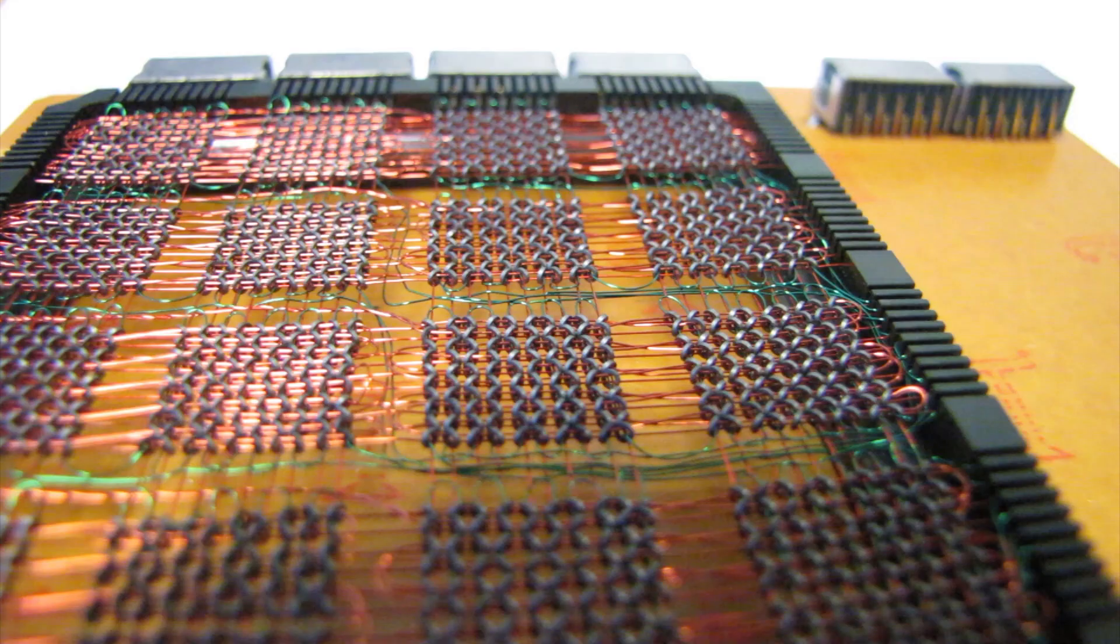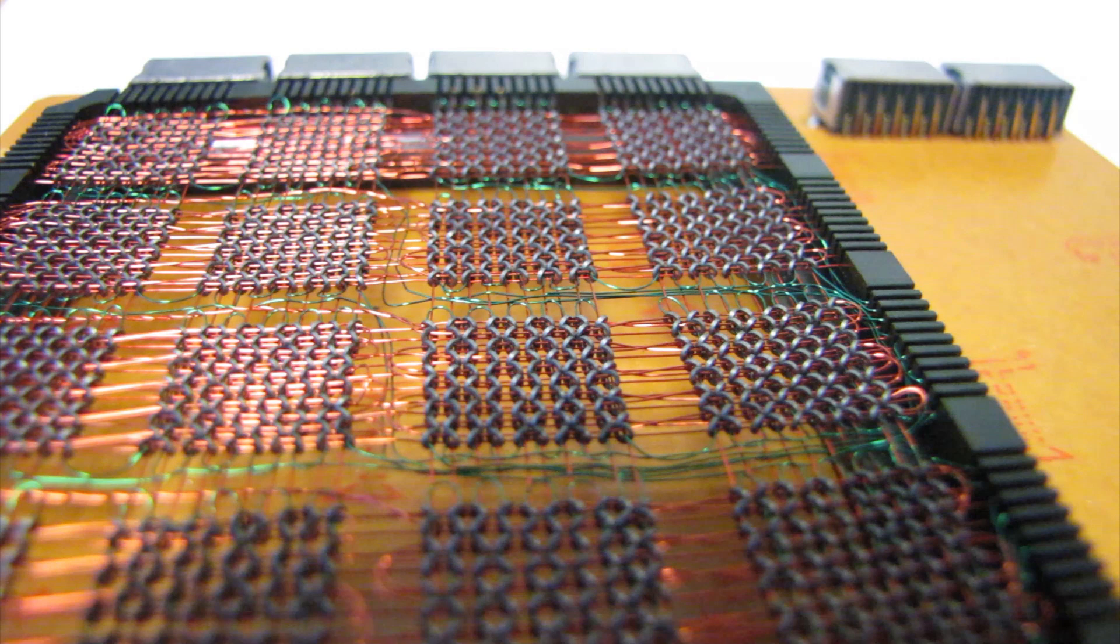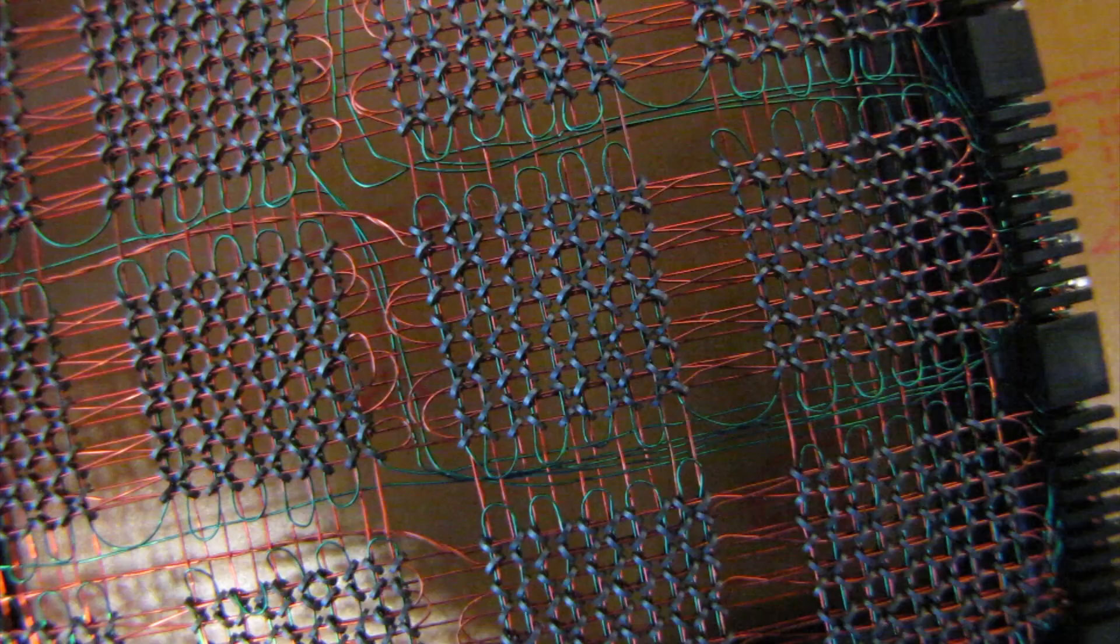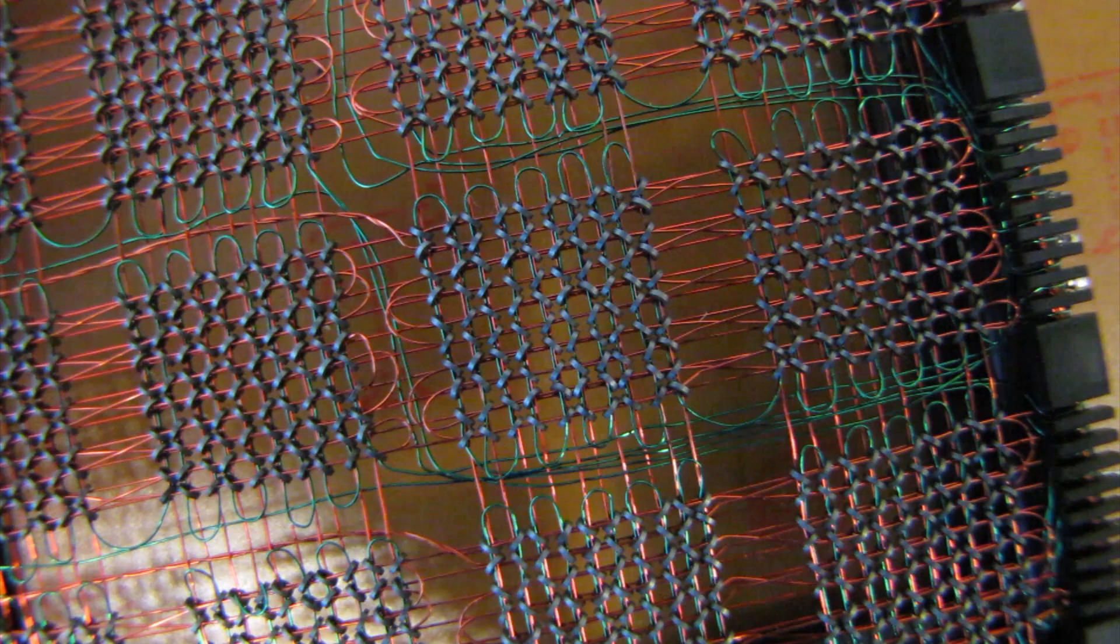This was a random access memory, which meant that you could get to your data in a millionth of a second. This is exactly what the computers of the age needed.